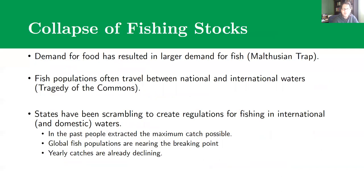A really good current example of this tragedy of the commons problem — with an element of the Malthusian trap as well — is global fish stocks. As global population has grown, demand for fish has grown too. We're at a point where we could potentially consume the viable stocks of fish in the Earth's oceans. International waters are open to fishing from people all over the world, creating a tragedy of the commons where everybody collectively can draw from this pool — potentially so heavily that we destroy fish populations, as we've seen with bluefin tuna in the Pacific.